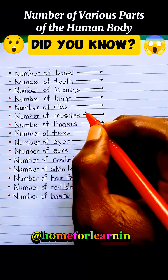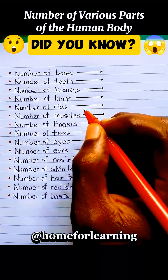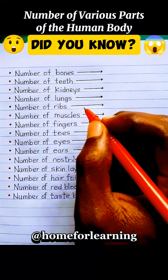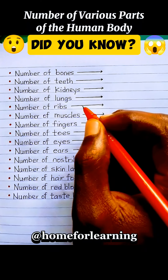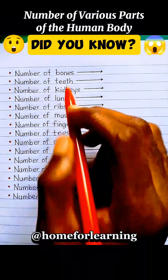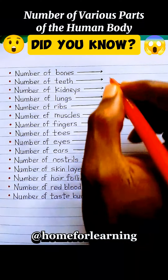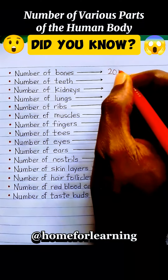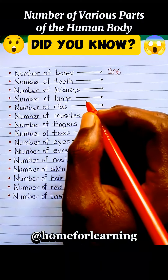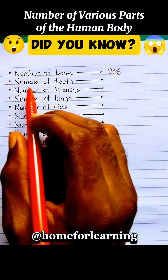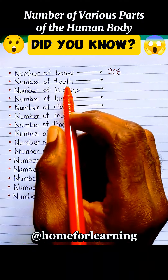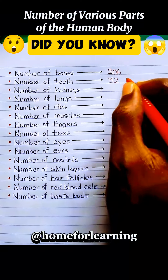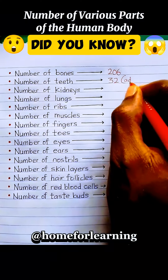Hi everyone, let's take a look at the approximate numbers of various parts of the human body. Number of bones: the number of bones in the human body is generally 206. Number of teeth: the number of teeth in the adult human is 32.